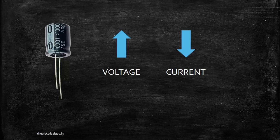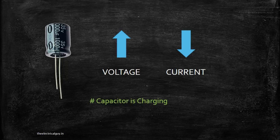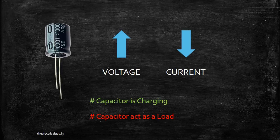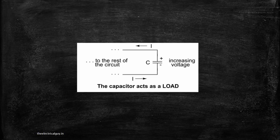The current will keep decreasing until the voltage becomes normal again. At this point, the capacitor is said to be charging, because it is taking current from the system. In this stage, the capacitor acts as a load because it is taking power from the circuit.